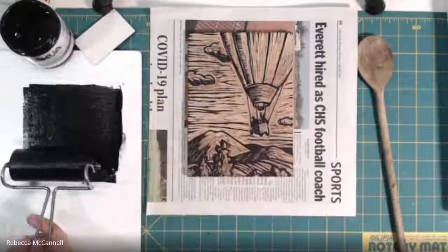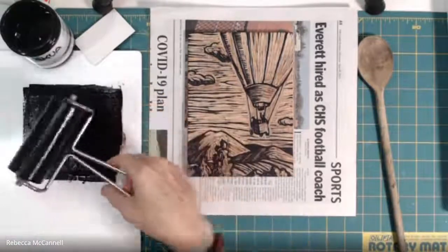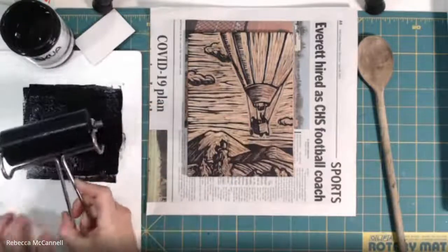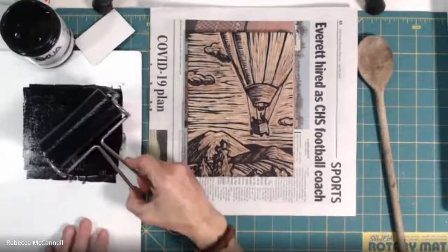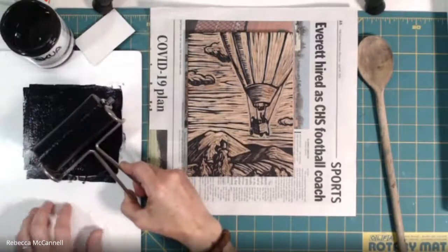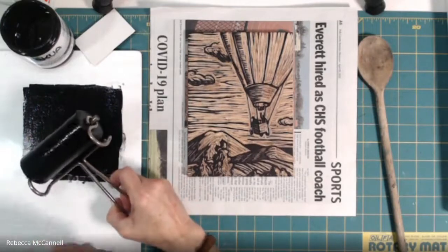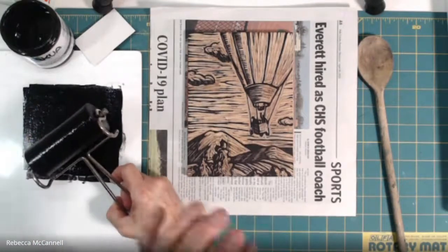I'm going to try to keep my inking area fairly small. It only needs to be as wide and as tall as the length of the brayer, so you don't need to spread it out all over your tabletop. I'm using a cutting board that I found at Goodwill, it's kind of like a very hard glass.